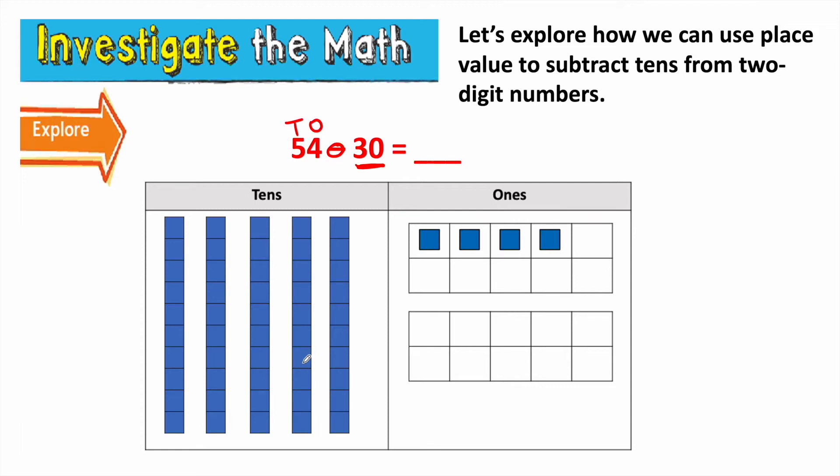So I could say 54, now let me take a ten away, 44, 34, 24. Did you see what I did there? I started with 54, and I took three tens away. I counted back by ten.